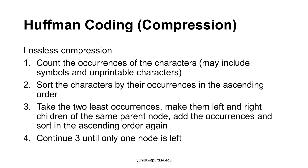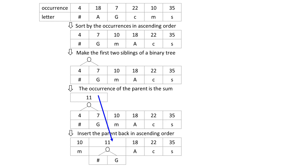This lecture explains the Huffman compression method, which is lossless compression, meaning the original data can be fully recovered. This method has 4 steps. In the first step, the occurrences of characters are counted, including all symbols and unprintable characters that appear in the original input. The second step sorts the characters in ascending order. The third step takes the least 2 occurrences, makes them share the same parent node, sets the parent's occurrence as the sum of the children's occurrences, and inserts this back in ascending order. This step removes 2 and adds 1, effectively reducing the number of characters by 1. Continue the third step until only one node is left.